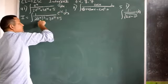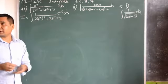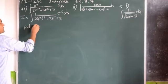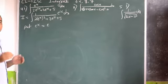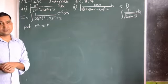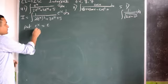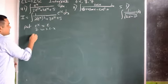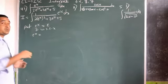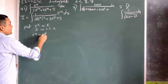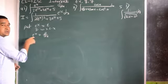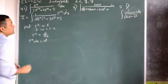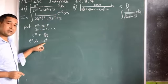Because the differentiation of e^x is e^x, let's put e^x equal to t. Then, differentiating with respect to x: the differentiation of e^x is e^x and differentiation of t with respect to x is dt/dx. Taking dx to the left, that means e^x dx is equal to dt. So e^x dx can be replaced by dt.